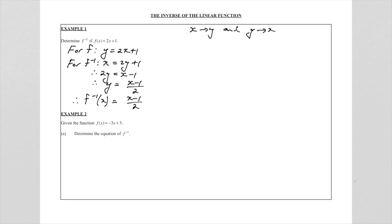A straight line graph is a function and the inverse is also a function. That is function f and that is the inverse.